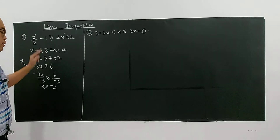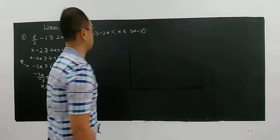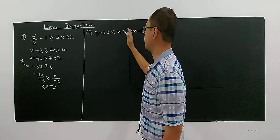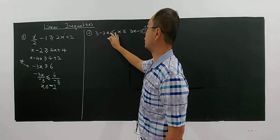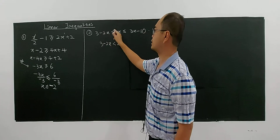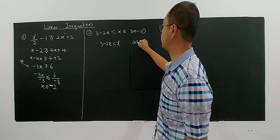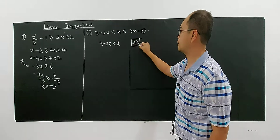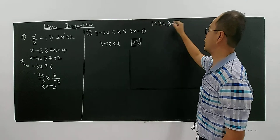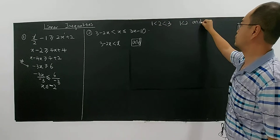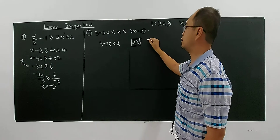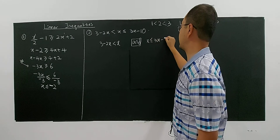So that's the solution for this inequality. Now let's move on. This is a sandwich inequality. Sandwich means there is an inequality in between. You have to divide this into 2 parts. For example, if 2 is between 1 and 3, we say 1 less than 2 and at the same time 2 less than 3 — we never use the word 'or'. So we use 'and': the first part is 3 minus 2x less than x, and the second part is x less or equal 3x minus 10.